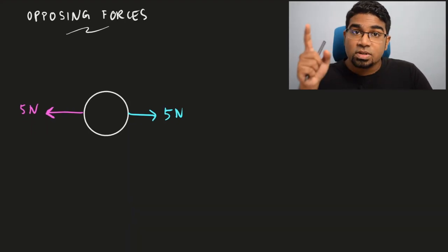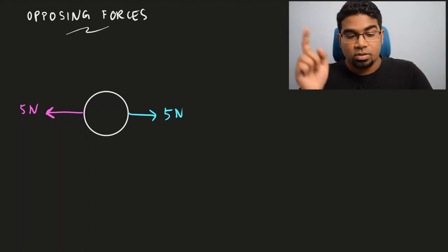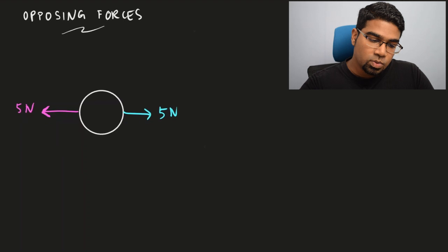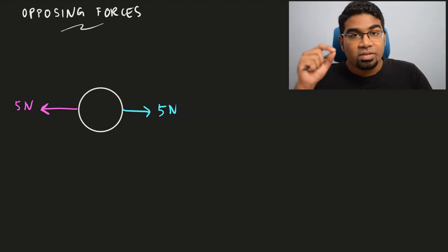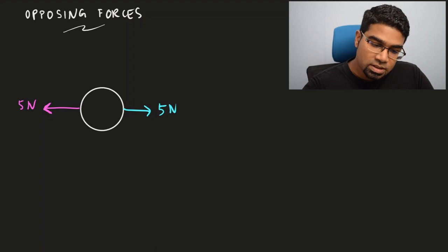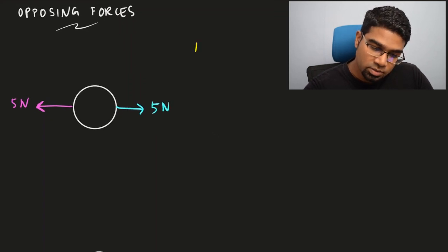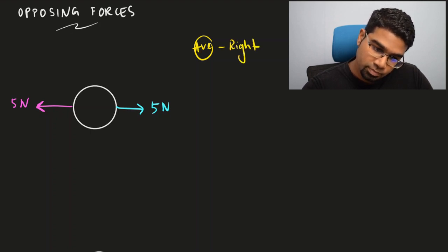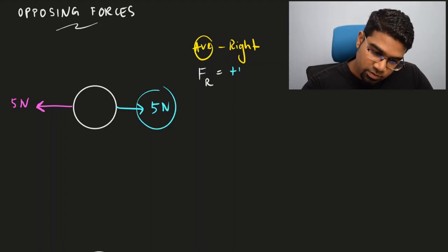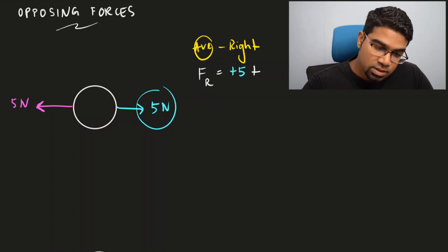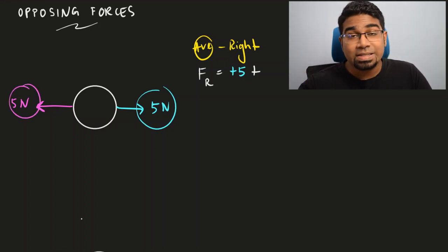Let's start with opposing forces — when the forces acting on an object are directly in the opposite direction of one another. In this case we have to assign one direction to be the positive direction, and the force in the opposite direction will have a negative value because it is a vector. So let's assign the right as positive. The resultant force, which I'm going to denote as F subscript R, is equal to — looking at all forces in the positive direction, which is the right direction, that is 5 newtons.